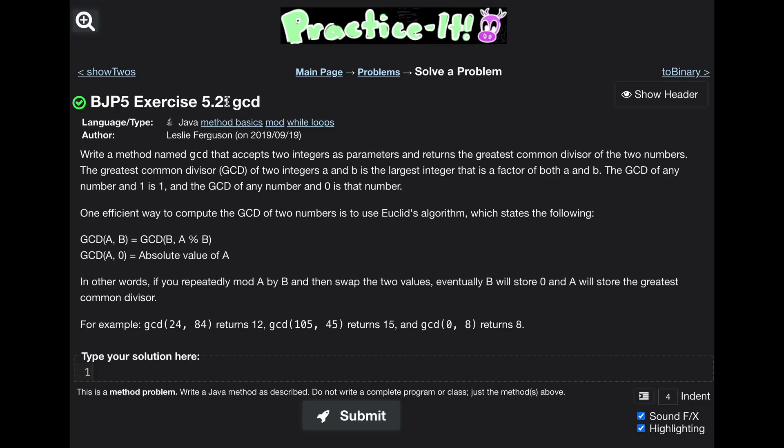For practice-it exercise 5.2 GCD, which stands for greatest common denominator, we need to write a method named greatest common denominator that accepts two integers as a parameter and returns the greatest common divisor of the two numbers.